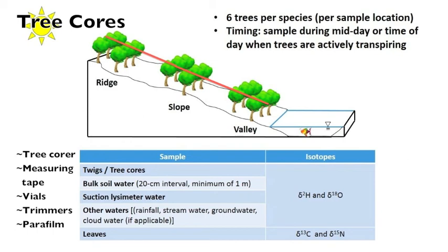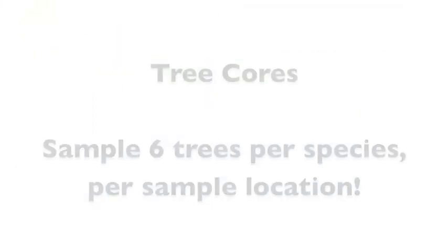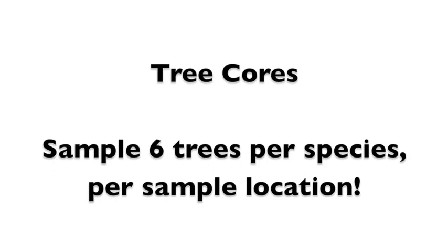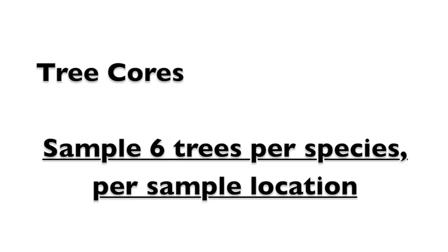Or alternatively, you may want to sample trees in a different forest type, soil type, or any other distinguishing landscape feature. Regardless of your site conditions, we would like to underline the importance of sampling at least 6 trees per species per sample location.